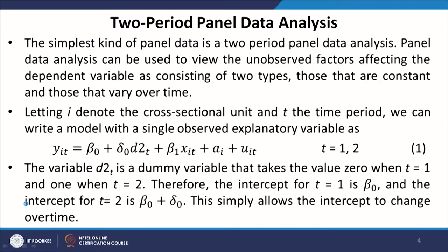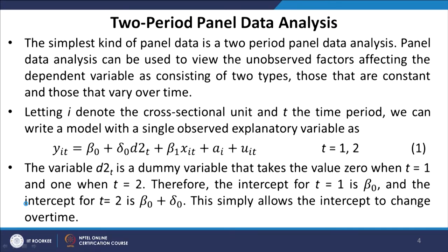What we first discuss is how to take care of the time variations. Letting i denote the cross-sectional unit and t the time period, we can write a model with a single observed explanatory variable as: y_it = β₀ + δ₀·d2t + β₁·x_it + a_i + u_it, for t = 1 to 2. This shows that for each individual there will be two equations — one pertaining to the first period and the second pertaining to the second period.